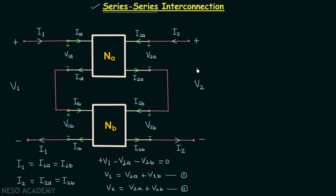Now I will explain why we are calling this a series-series interconnection. In a series combination, the current through the elements remains the same and the voltages across them are added. Focusing on port number 1: the input current I1A equals I1B — the input currents of both networks are the same — and V1 equals V1A plus V1B, so the input voltages add. Therefore, the input port of the first network is in series with the input port of the second network.